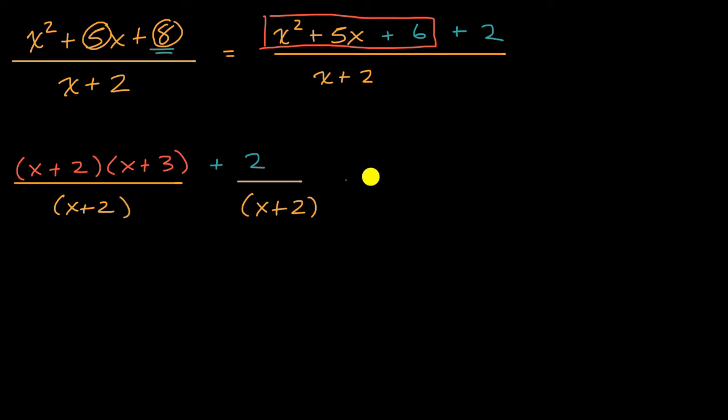And then here, we could say, look, this first part, as long as x does not equal negative two, because then we would be changing the domain, then these two would cancel out. You could say, I'm just dividing the numerator and the denominator by x plus two. And so this would be equal to x plus three plus two over x plus two.